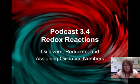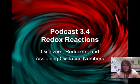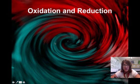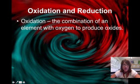Hey folks, AP Chemistry time. We're on podcast 3.4 now. We're going to look at how to tell if something's being oxidized or reduced and how to assign oxidation numbers. So let's just get right to it.